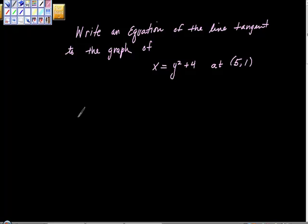Okay, so this is write an equation of a line tangent to the graph of x = y² + 4 at the point (5, 1).